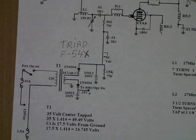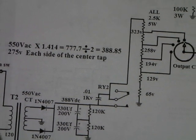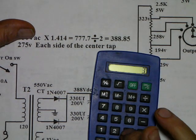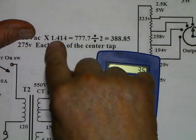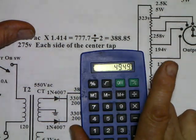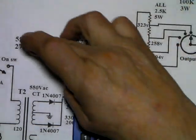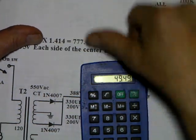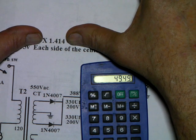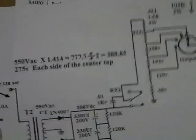For the math, ignore the 550. Just take the voltage you have, like 35 volts. 35 times 1.414 gives you 49.4 volts. That's how you come out with that. You use the 1.414 on any AC voltage to find out what your DC voltage is after it's rectified.